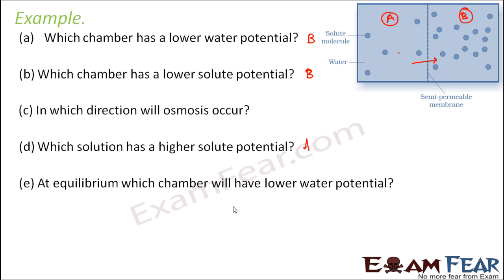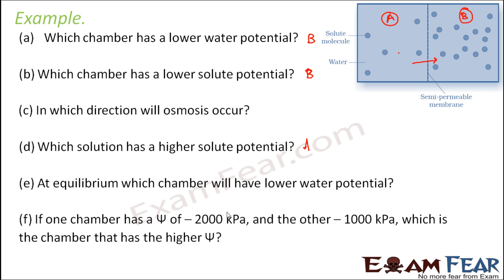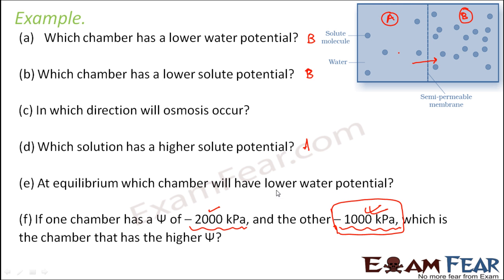At equilibrium, which chamber will have lower water potential? When we say equilibrium, we mean that the concentration of both regions will be the same. If one chamber has a potential of minus 2000 kilopascals and the other has 1000 kilopascals, which chamber has the higher potential? If you only look at the magnitude, 2000 is more, but since it has a negative sign it is a more negative value, meaning it is less. So the chamber at 1000 kilopascals has a higher water potential, and water will move from that chamber to the minus 2000 kilopascals chamber — from higher water potential to lower water potential.